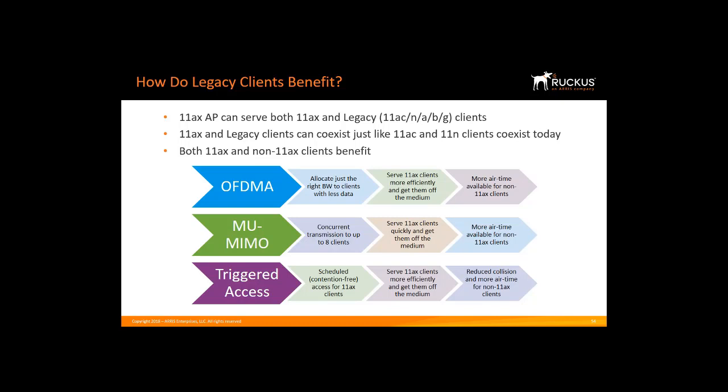11ax uses the fast lanes, and 11ac devices have fewer clients to contend with. I have 11ax technologies of OFDMA and multi-user MIMO, triggered access, BSS color, long OFDM symbol, and 1024 QAM that serve 11ax clients in a much more efficient way, which clears up airtime for legacy devices.